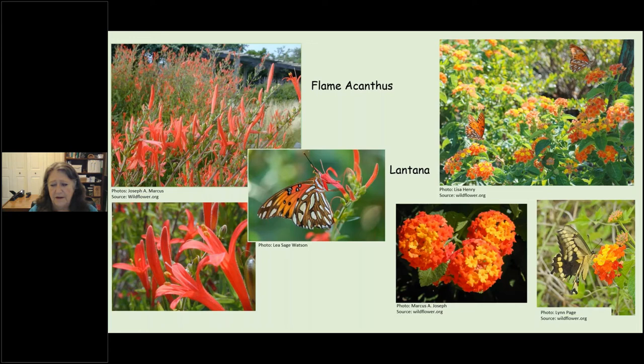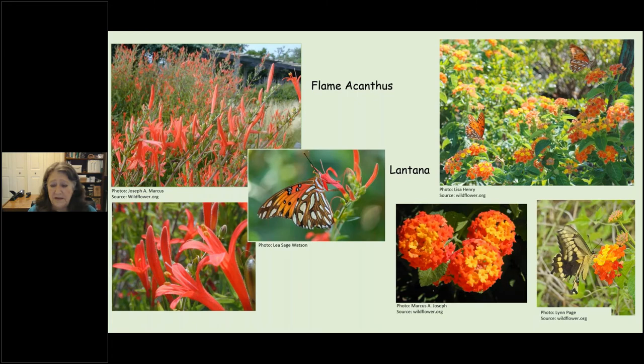A warning about lantana: it has been hybridized almost out of existence. The beautiful yellow-and-lavender ones are not native, and bees and butterflies may not be able to find them. You need the orange-and-yellow or red-and-yellow ones — those are the native lantanas. That's why your plant list includes the botanical name, so you can compare it to the tag on the plant in the nursery.